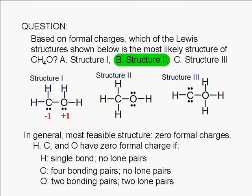The formal charges for carbon and oxygen in structure 1 are negative 1 and positive 1, respectively. For structure 2, they're both zero. For structure 3, the formal charges are negative 2 and positive 2. Structures with formal charges of positive 2 or negative 2 are very unlikely to resemble reality.